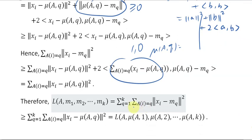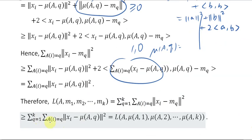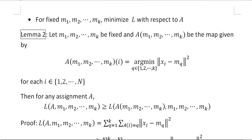Taking the further summation over all q's gives the loss function, which is greater than or equal to the loss function when the m's are replaced by the mu's. This finishes the proof of Lemma 1.